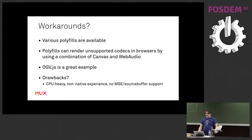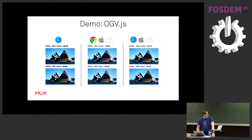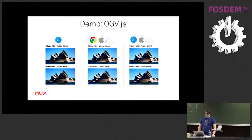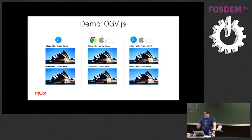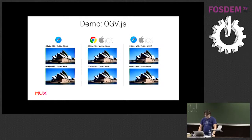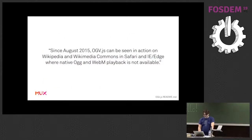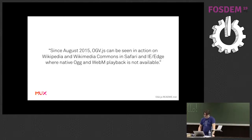I took OGV.js and threw it into our three challenging situations, so we can see that working. We now have VP8, VP9, Vorbis, and Opus playing back on our Safari browser, Chrome on iOS, and Safari iOS as well. That works absolutely fine. It'll get challenging as CPU and memory requirements go up with resolution, but it totally works. Since 2015, OGV.js does exactly this for Wikipedia, giving Wikipedia the browser coverage they wouldn't otherwise be able to achieve, given that they only deliver VP8 and VP9.